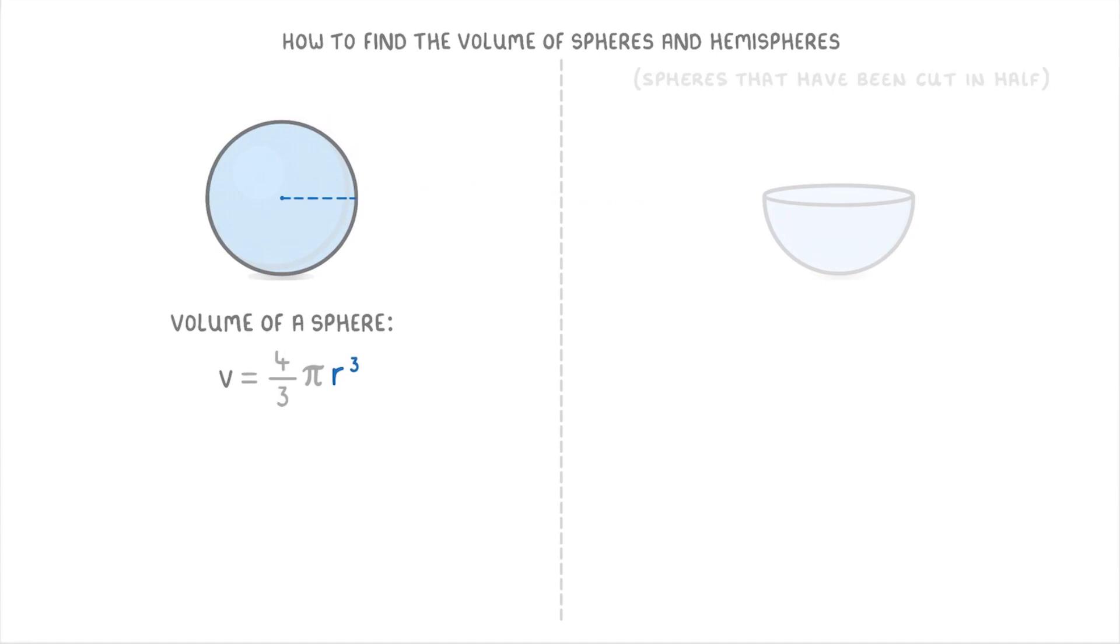So if our sphere had a radius of 5 centimeters, then its volume would be 4 thirds times pi times 5 cubed, which would give us 524 cubic centimeters.